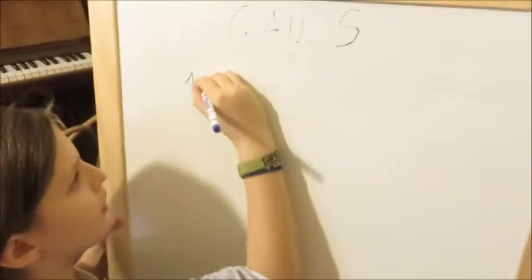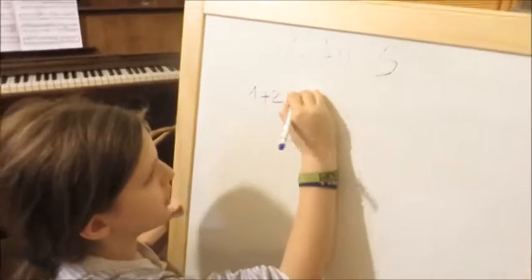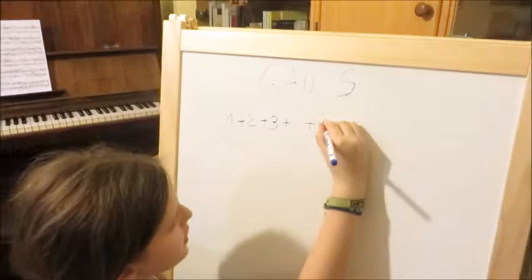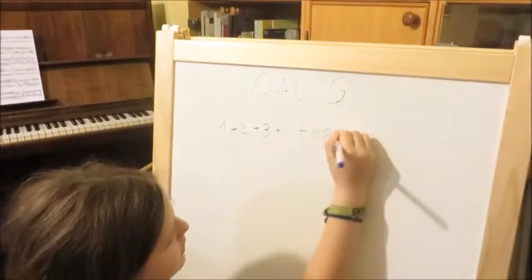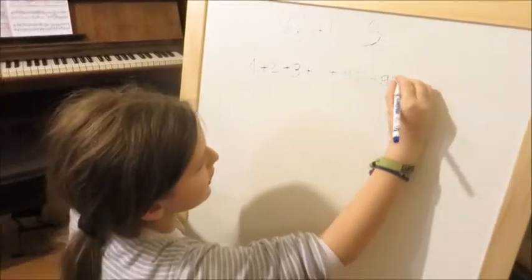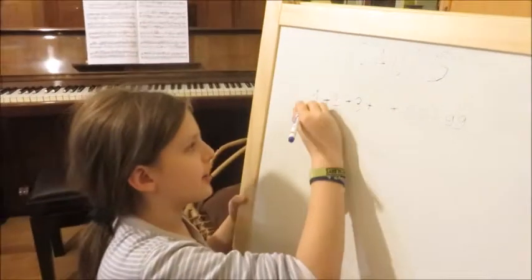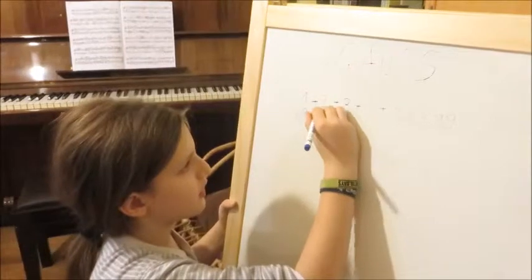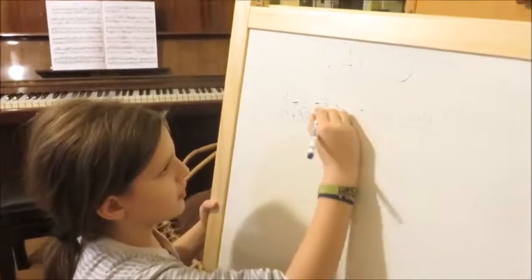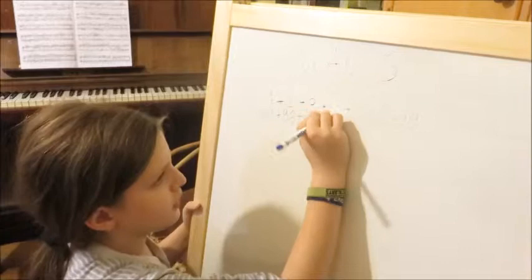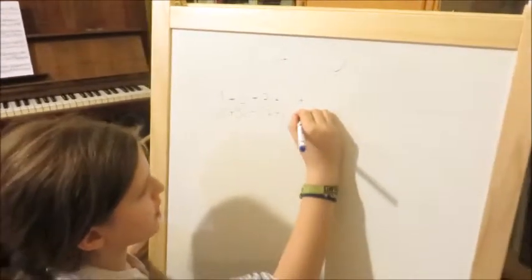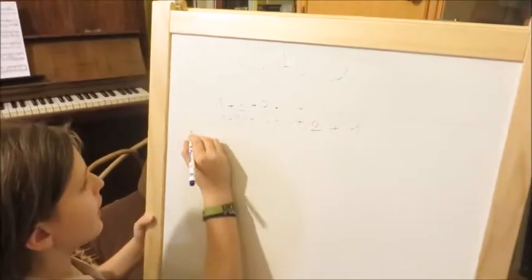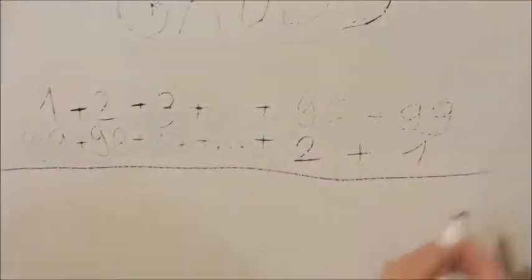So he put 1 plus 2 plus 3 plus, I'll put three dots here, plus 98 plus 99. Now underneath that, I'm going to write another row, 99 plus 98 plus 97, and so on, plus 2 plus 1. And we have to add that now, those two rows.